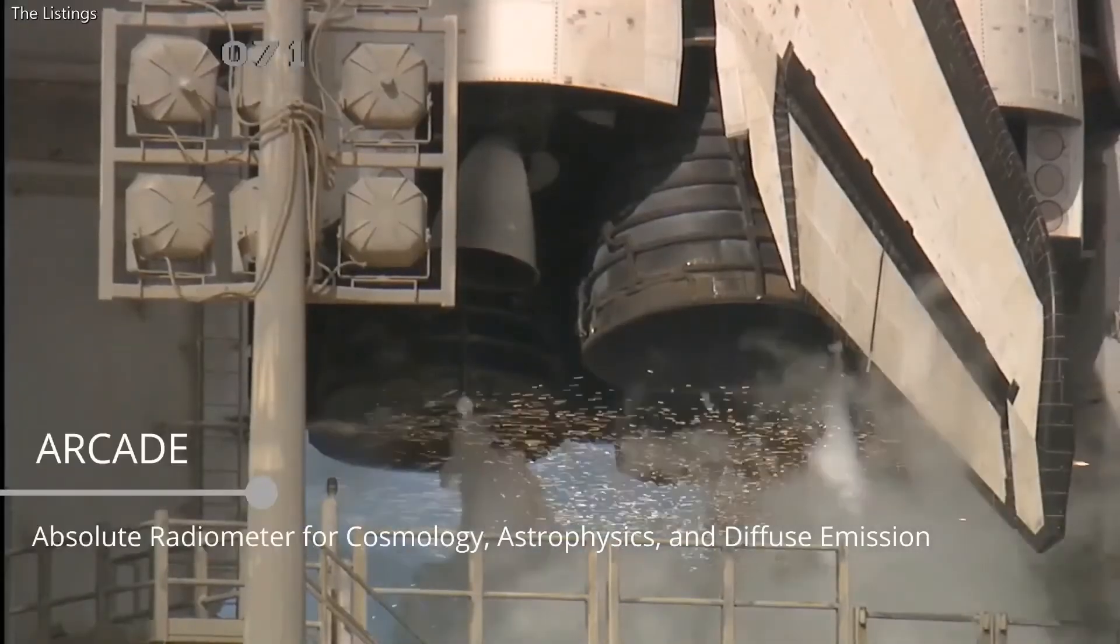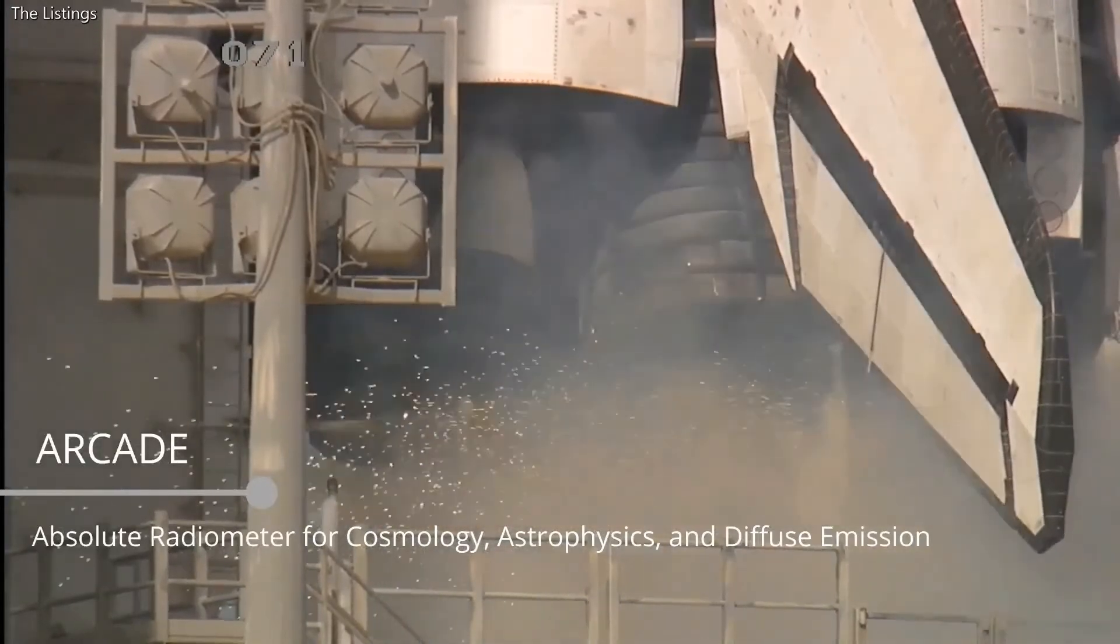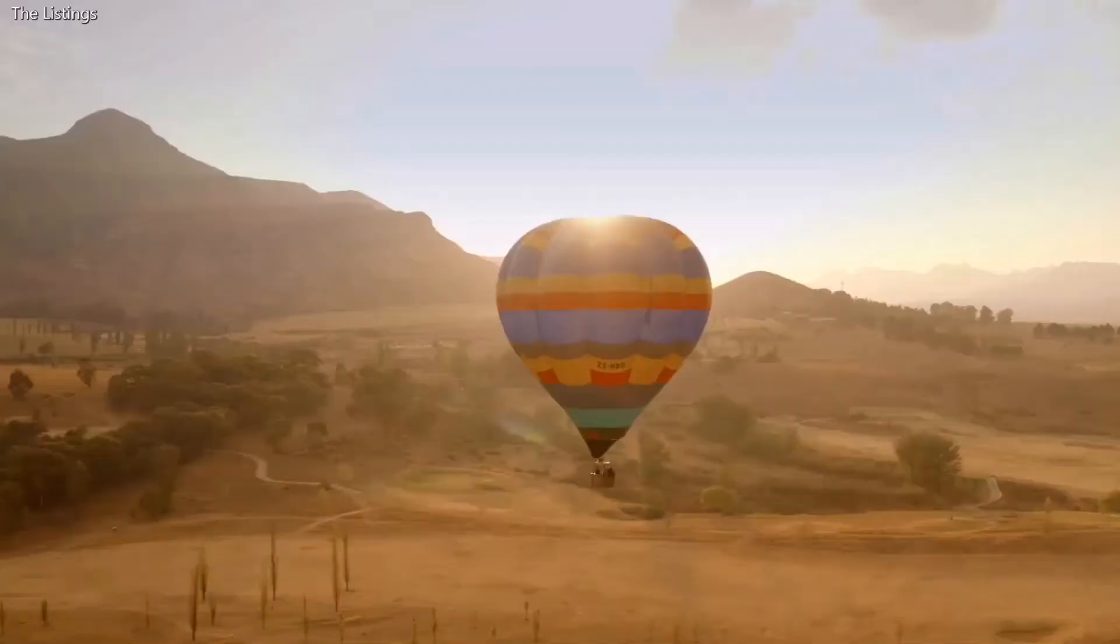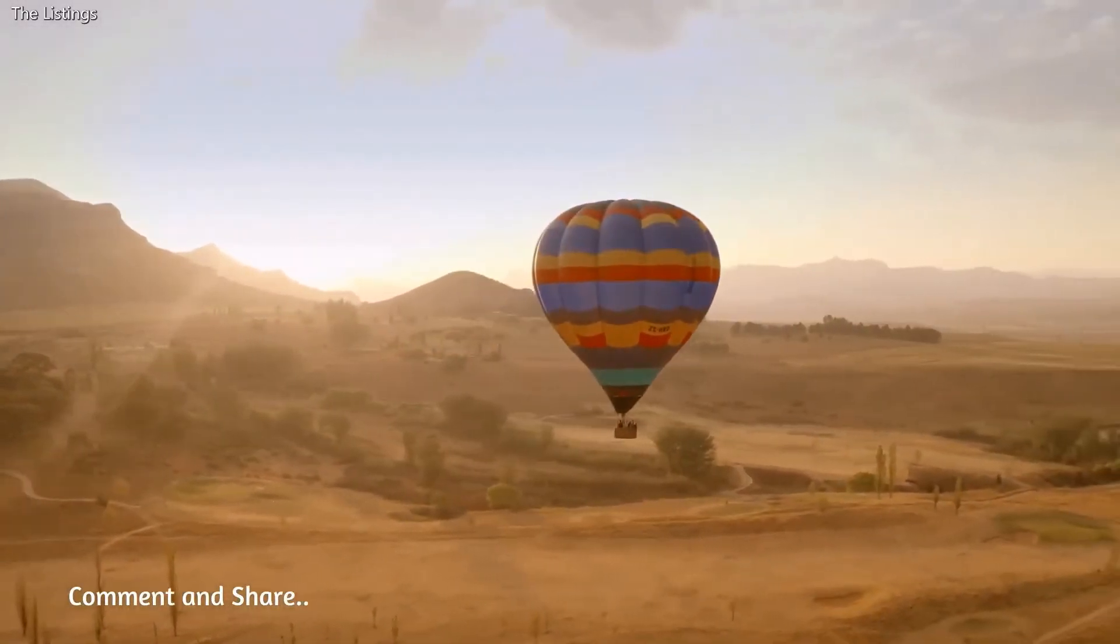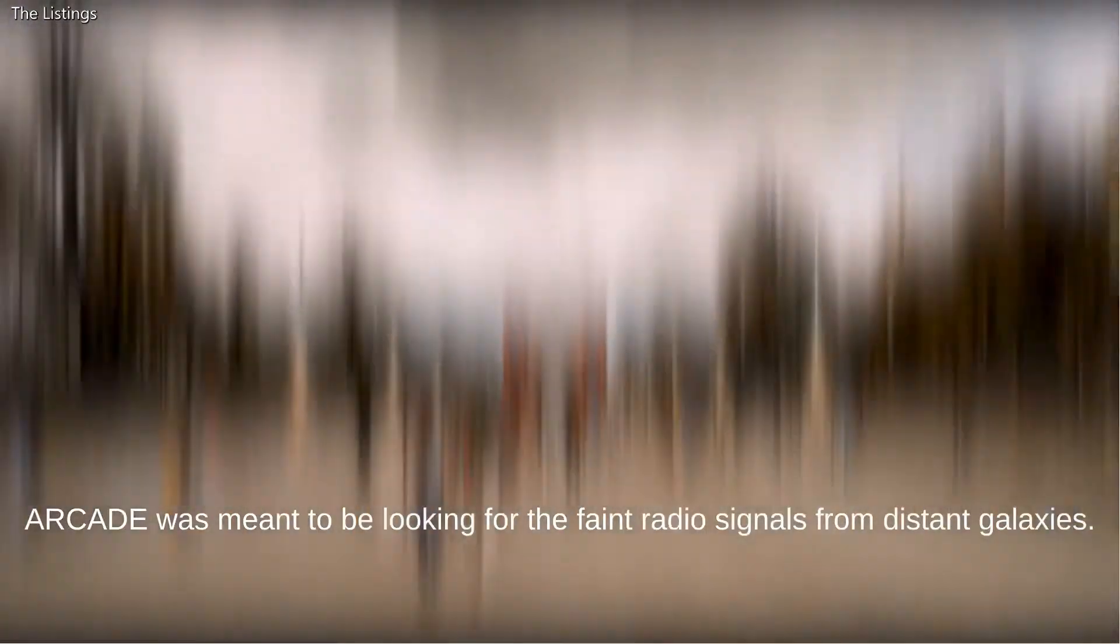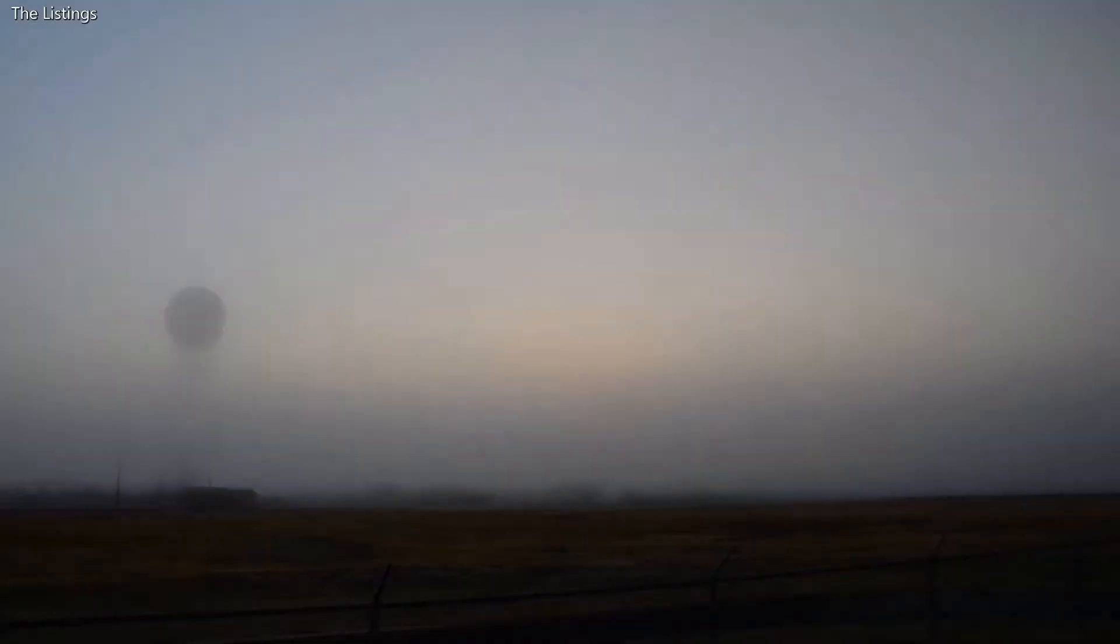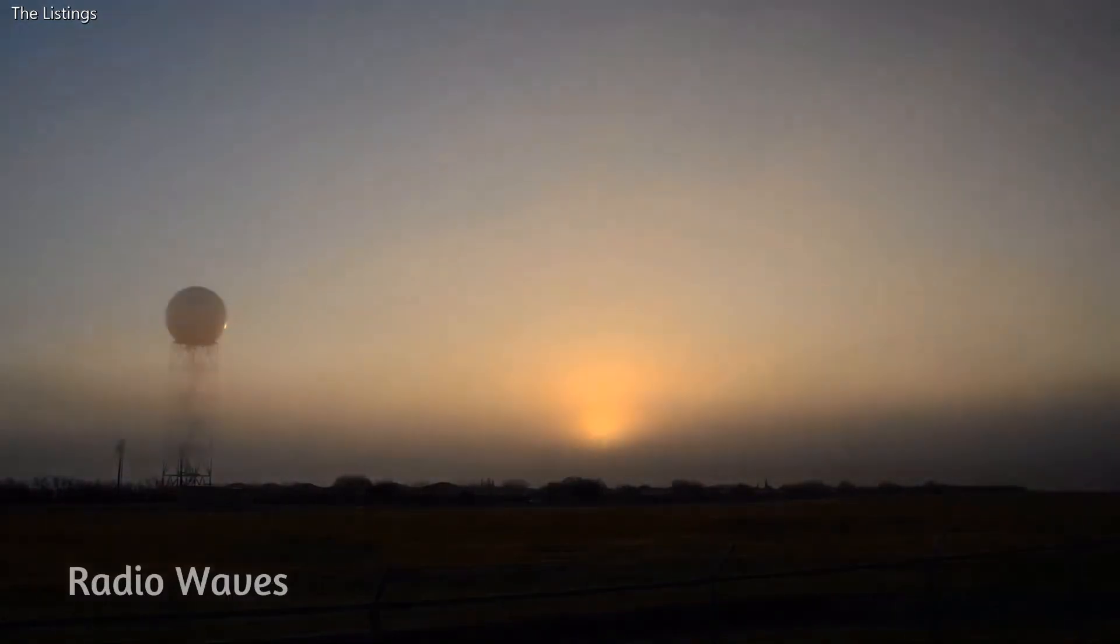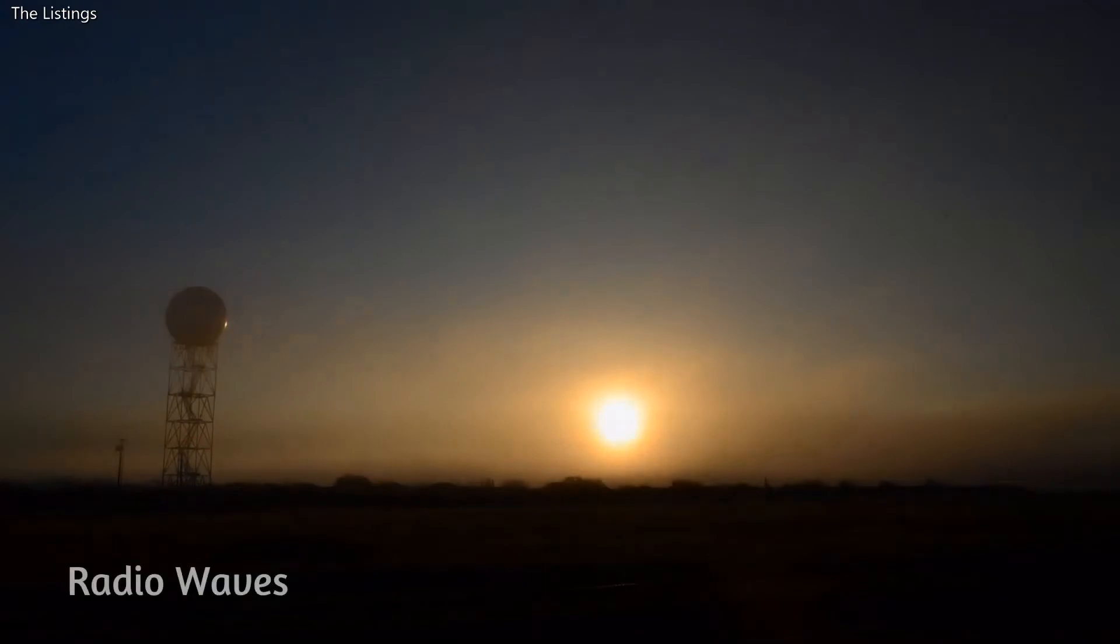Space roar was first discovered by ARCADE, the Absolute Radiometer for Cosmology, Astrophysics, and Diffuse Emissions. It was equipment that NASA attached to a large balloon and sent up into space. ARCADE was meant to look for faint radio signals from distant galaxies. It was using radio waves, which are not visible to the naked eye but can help us find distant stars giving off faint radio signals.